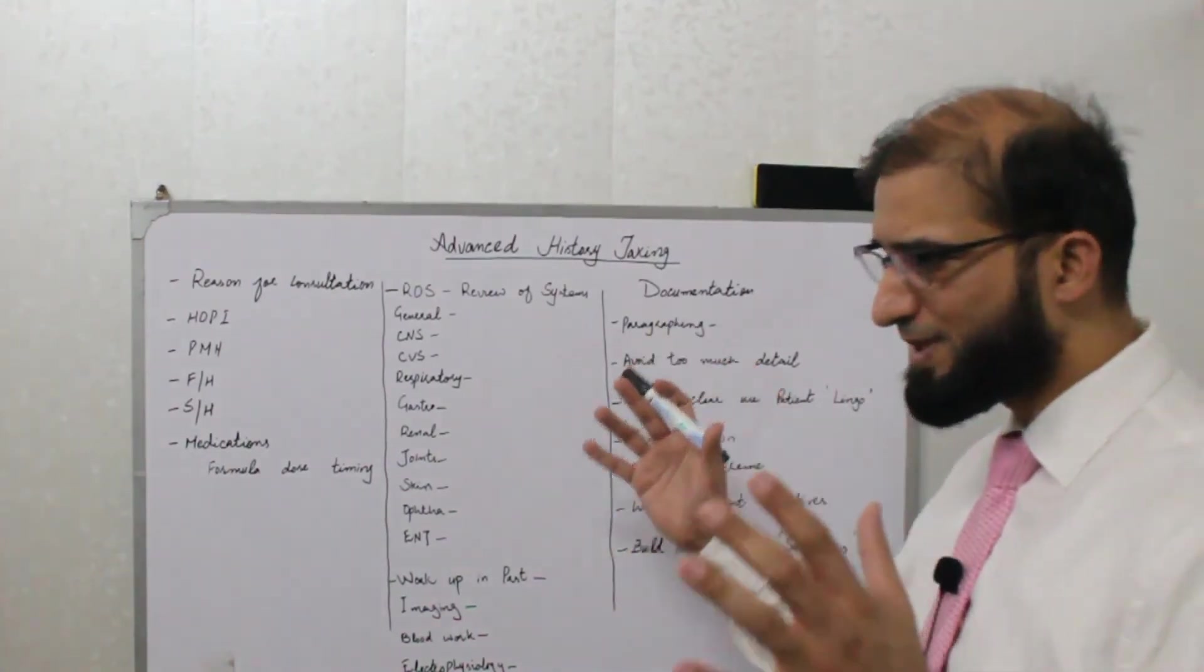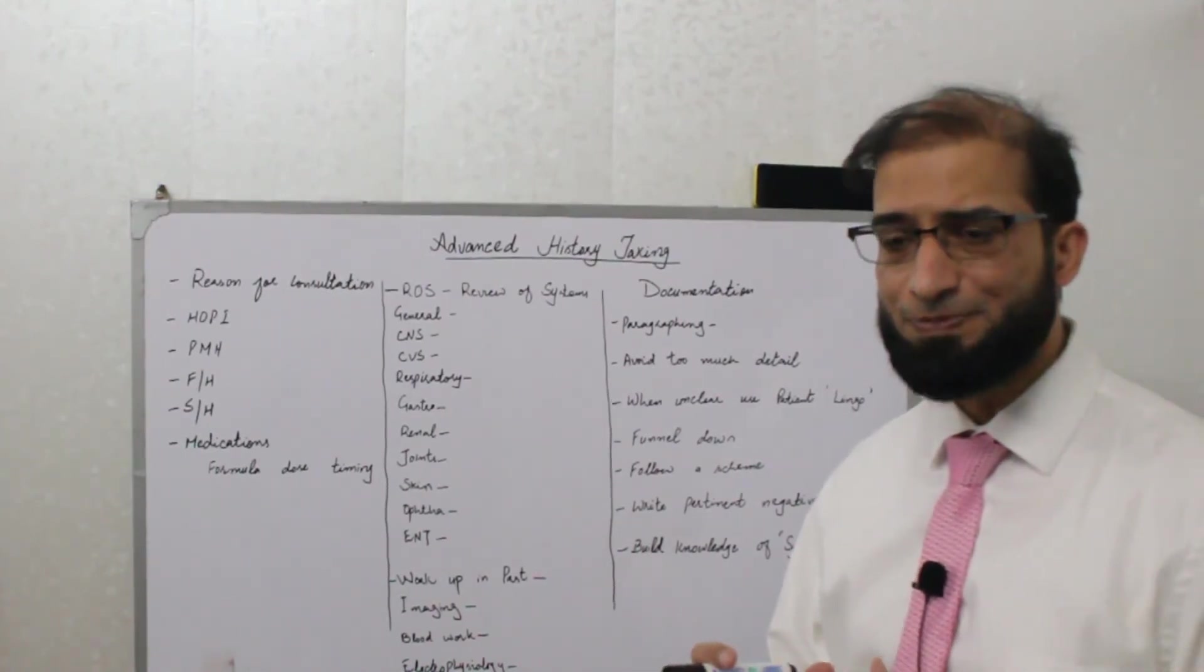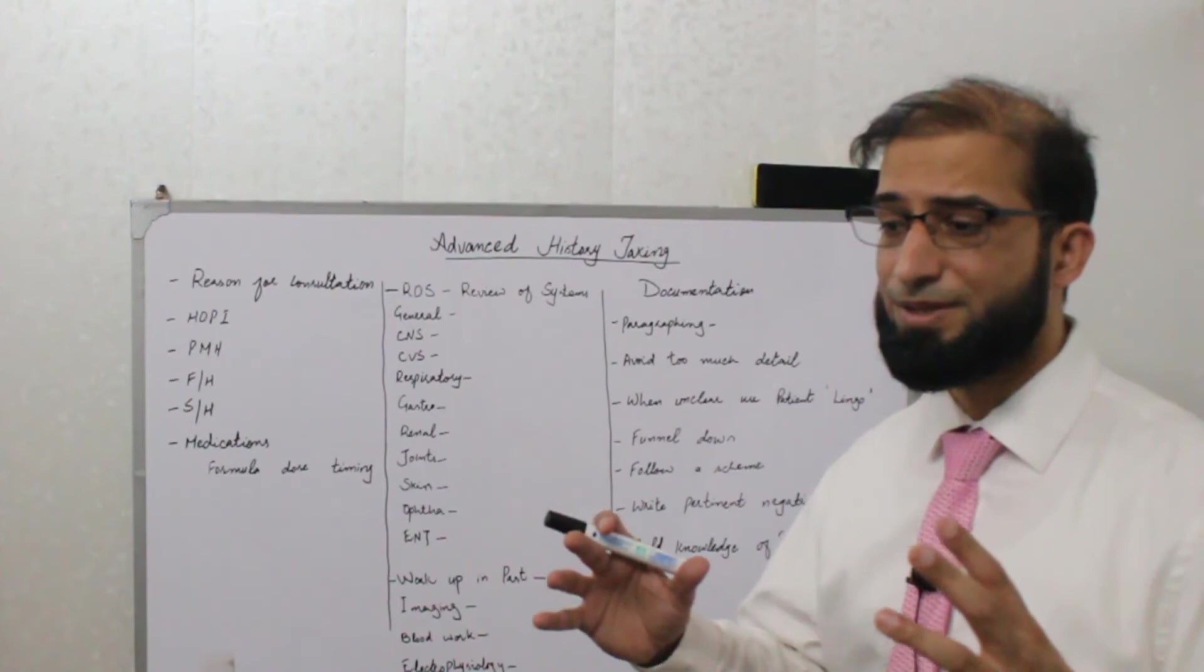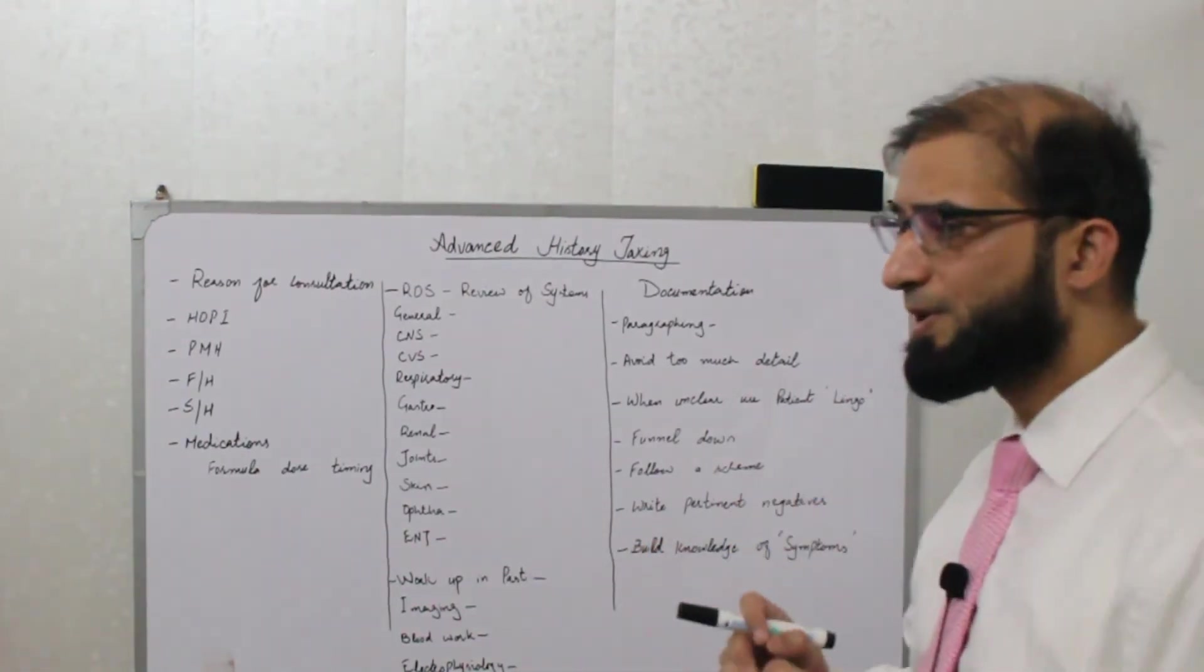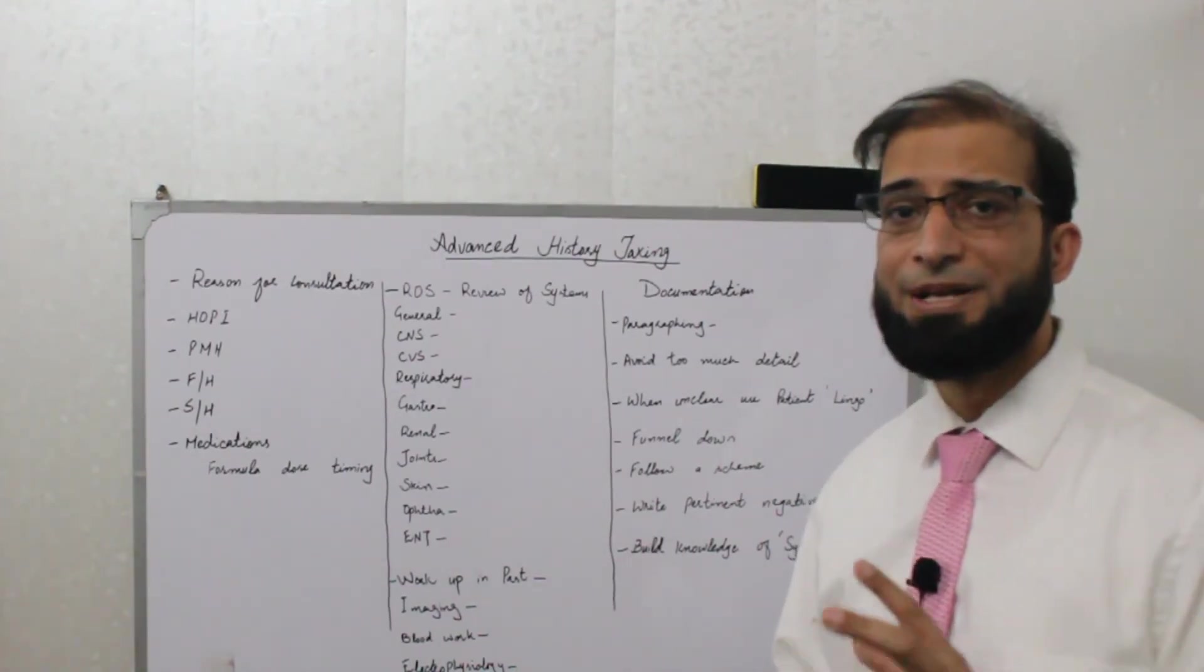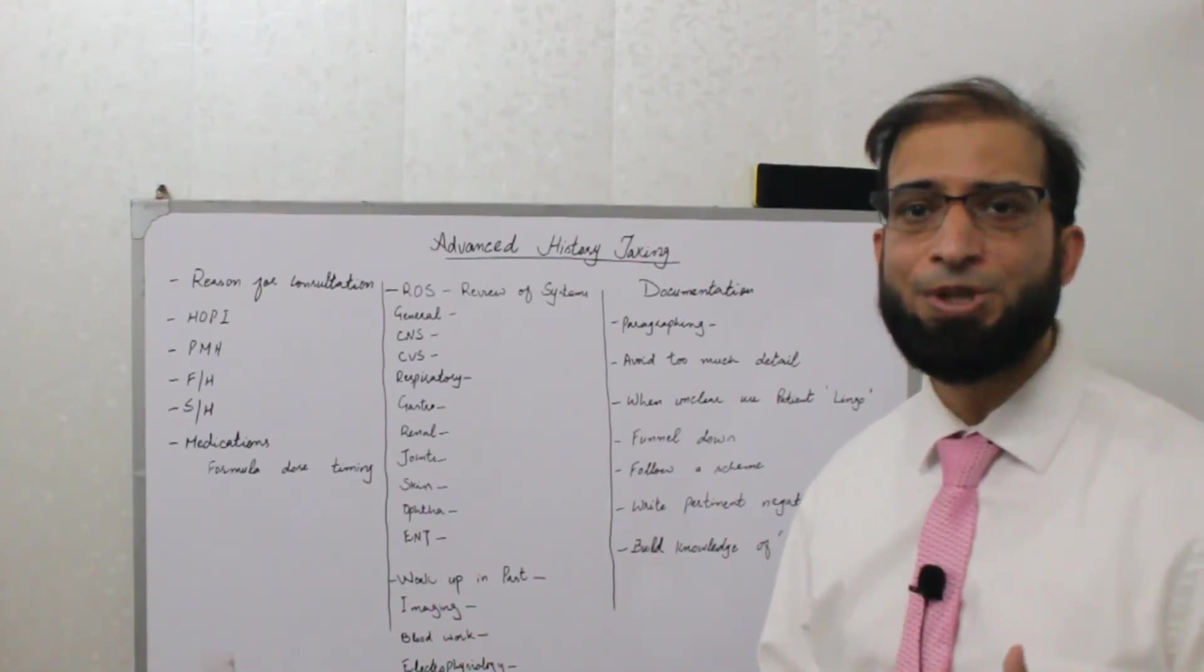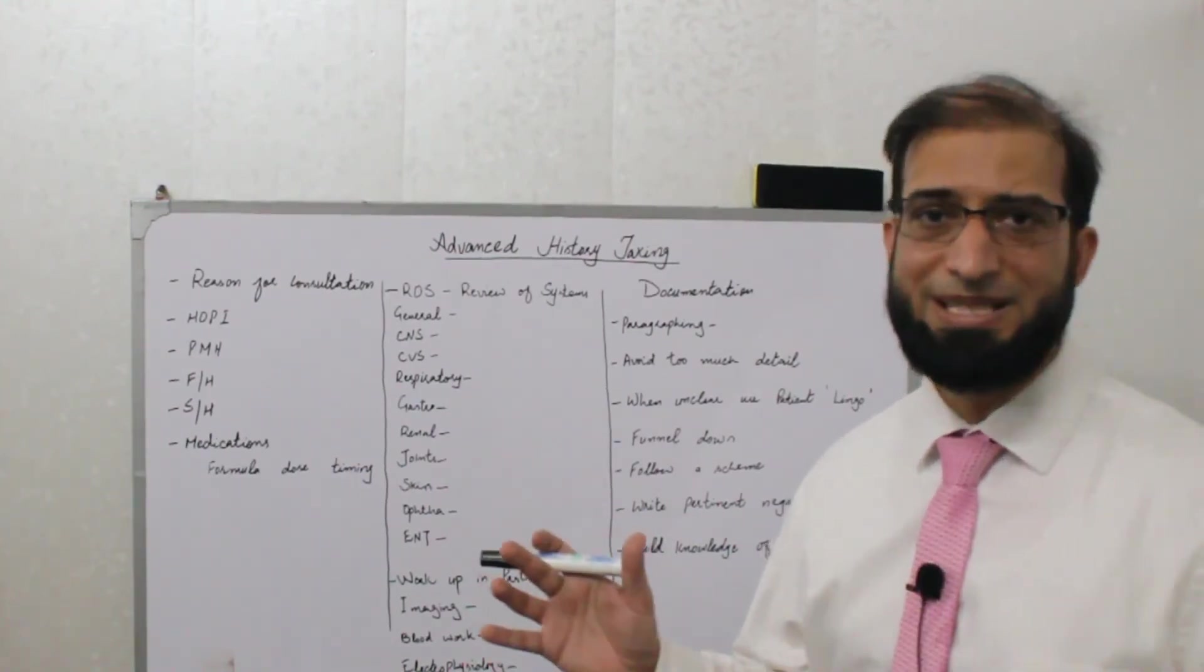And try to funnel down your history. So as a reader is reading your history as a third party, they should be having the idea of what you are thinking or what's going on in your brain or what your differential is in this particular case. And try to follow a scheme because when you follow a scheme it saves time. And most of the part when you are taking history is to save your time at that point and in the future, but it should be in a schematic manner so you don't lose your time getting detail which is not related.